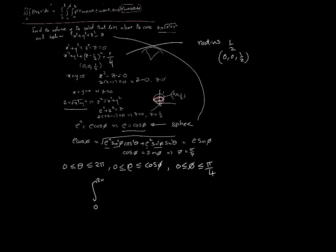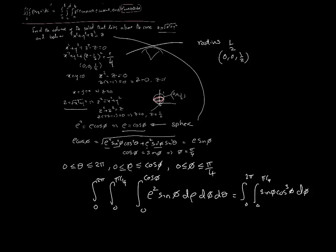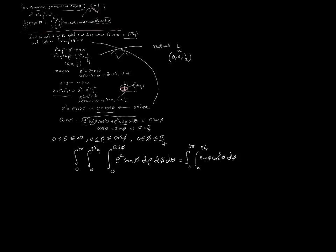Our integral is: ∫₀²π ∫₀^(π/4) ∫₀^(cosφ) ρ² sinφ dρ dφ dθ. Since we're finding volume, the integrand is just 1 times the Jacobian. Integrating over ρ gives sinφ cos³φ, and integrating over φ gives cos⁴φ terms. The result works out to (1/16) integrated over θ from 0 to 2π, giving a final answer of π/8.